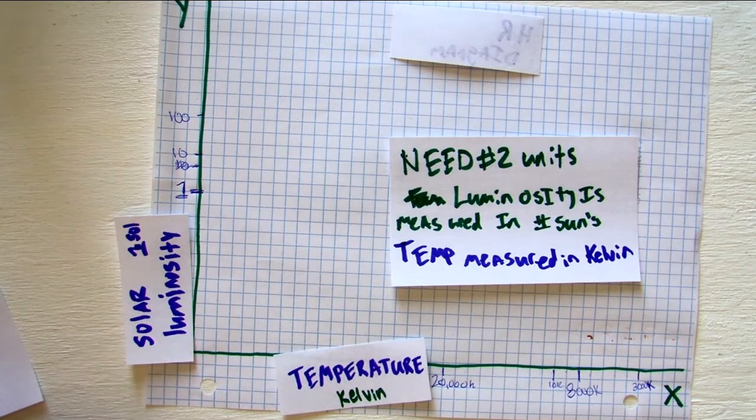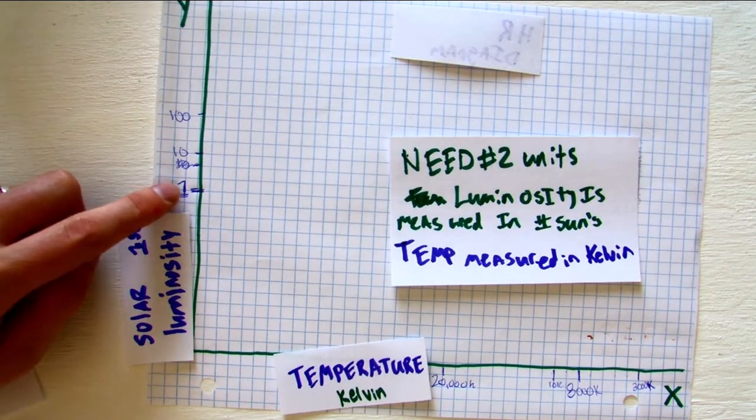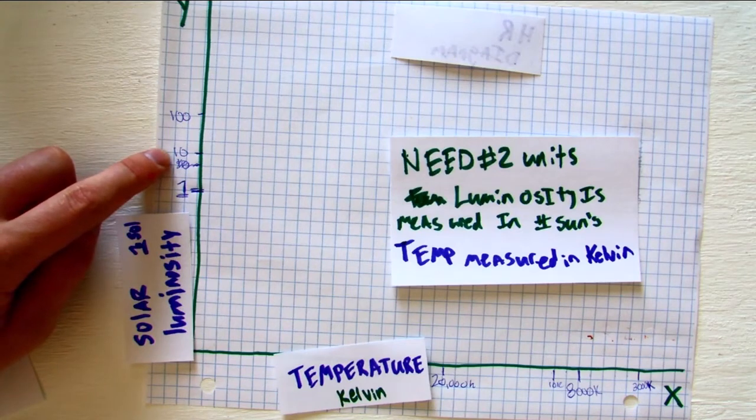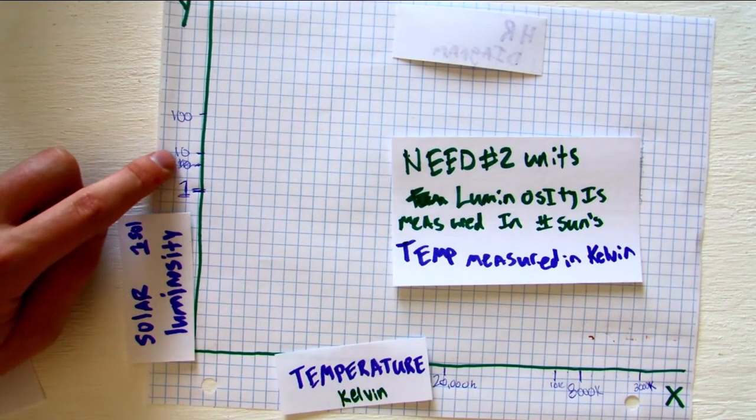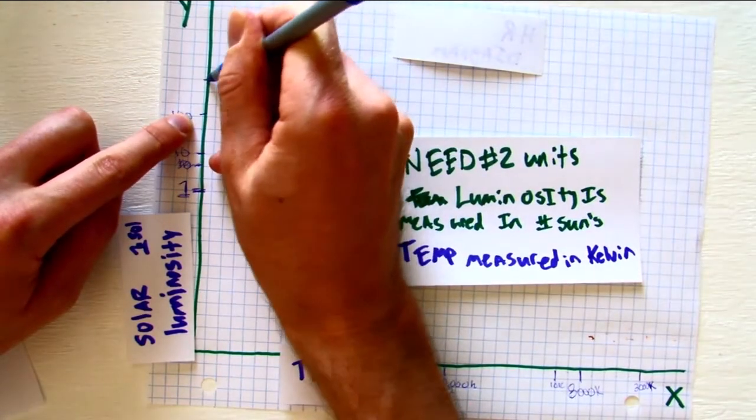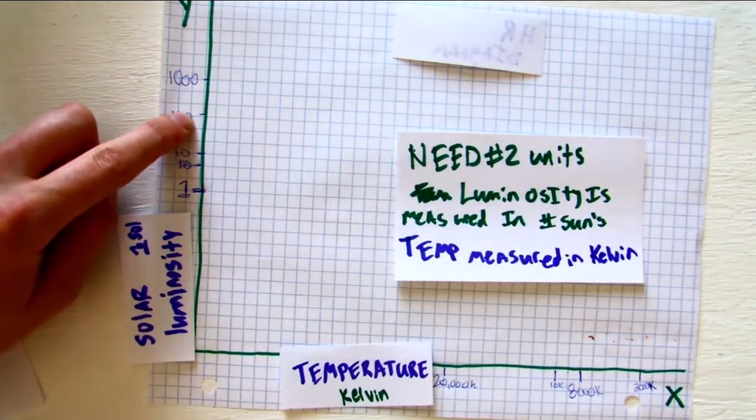On the Y axis, it's logarithmic, which means every three spaces, I actually have it going up by 10 times. So this is one solar luminosity, 10 solar luminosities, 100 solar luminosities, 1,000 solar luminosities.